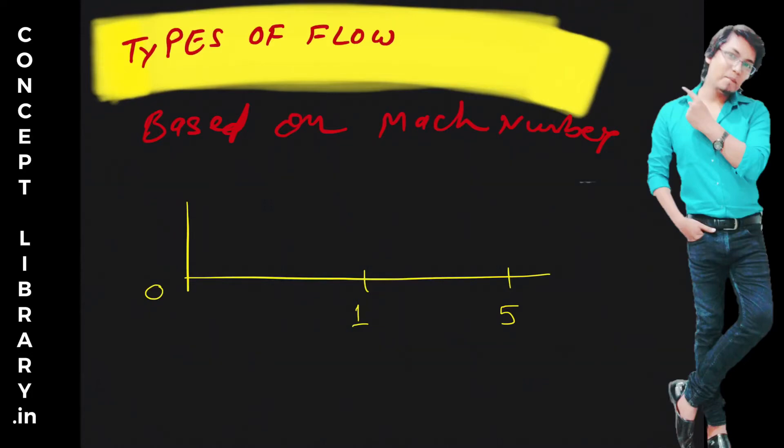We are going to discuss types of flow based on Mach number. So suppose your Mach number is 0, and here I have taken Mach number 1, and here I have taken Mach number 5. So flow is having Mach number less than 1, so all flows with Mach number less than 1 are known as subsonic flow.